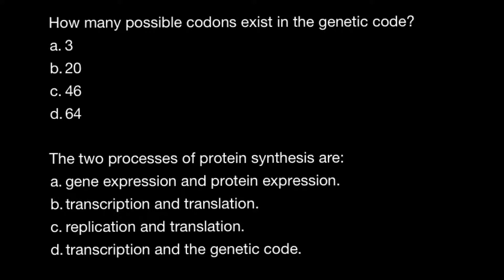So here is the first question: how many possible codons exist in the genetic code? And the correct answer would be 64, so answer D.